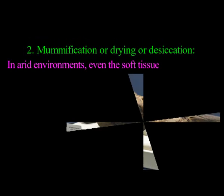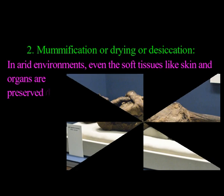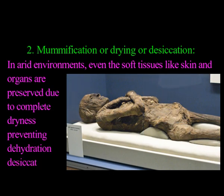The second process responsible for fossilization is mummification, or drying, also called desiccation. As we know about human remains present as mummies in Egypt, these fossils are found in arid environments with high temperature and lack of moisture. Even soft tissues like skin and organs are preserved due to complete dryness, preventing decomposition through desiccation.